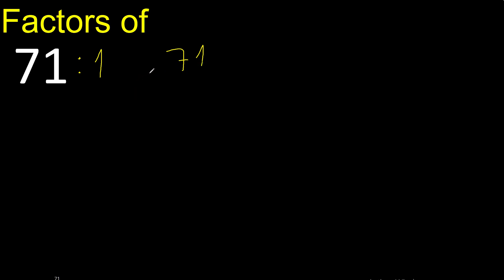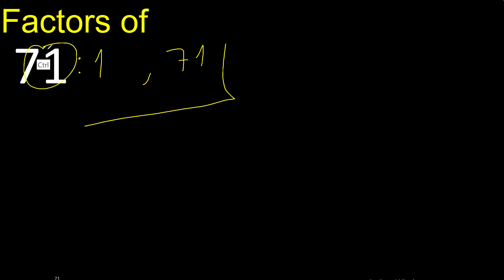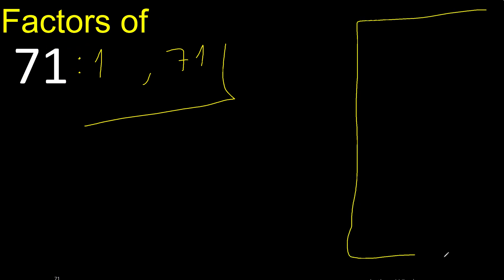Therefore, finished. 71 can only be divided by 1 and 71 exactly, because it is a prime number. More examples here.